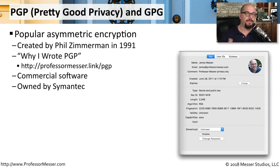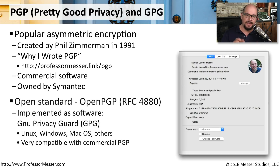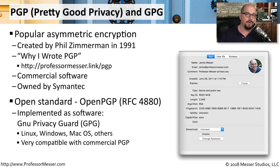Another popular form of asymmetric encryption is PGP, or Pretty Good Privacy. This was written in 1991 by Phil Zimmerman. Today, PGP is commercial software owned by Symantec. But there is an open standard called OpenPGP, referred to as RFC 4880. It's implemented as software called GNU Privacy Guard, or GPG, and there are versions of GPG available for Windows, Linux, macOS, and many other operating systems.